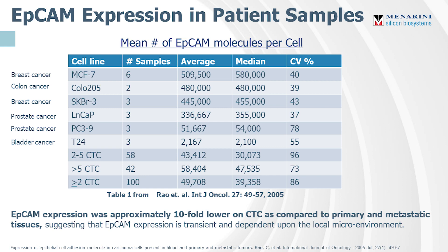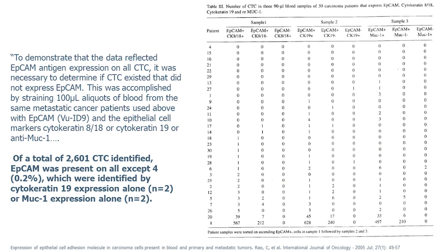When they compared with immunohistochemistry, about 97% of solid tumors had detectable EpCAM, with 72% of those tissues showing antigen expression levels greater than 400,000 EpCAM molecules per cell. This is the foundational data that CellSearch was designed off of. They anticipated the question of EpCAM negative cells. In this figure, they looked at 2,600 CTCs and compared positivity for EpCAM or positivity for cytokeratin 8, 18, cytokeratin 19, or MUC1. Of the 2,600 CTCs identified, EpCAM was present on all except four, which were identified by cytokeratin 19 expression alone (two CTCs) or MUC1 expression alone.